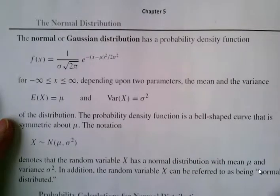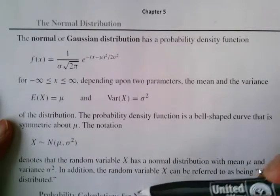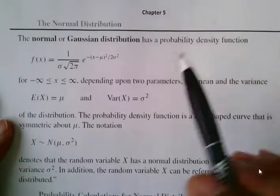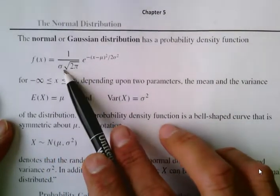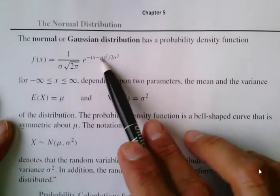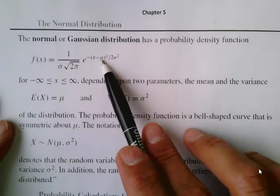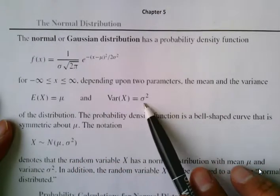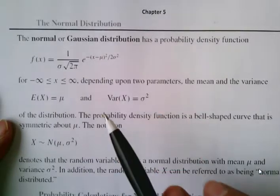In this video we will study probability calculations for normal distributions. The probability density function for the normal distribution is listed here, in which sigma is the standard deviation, mu is the mean and expected value, and sigma squared is the variance for this distribution.